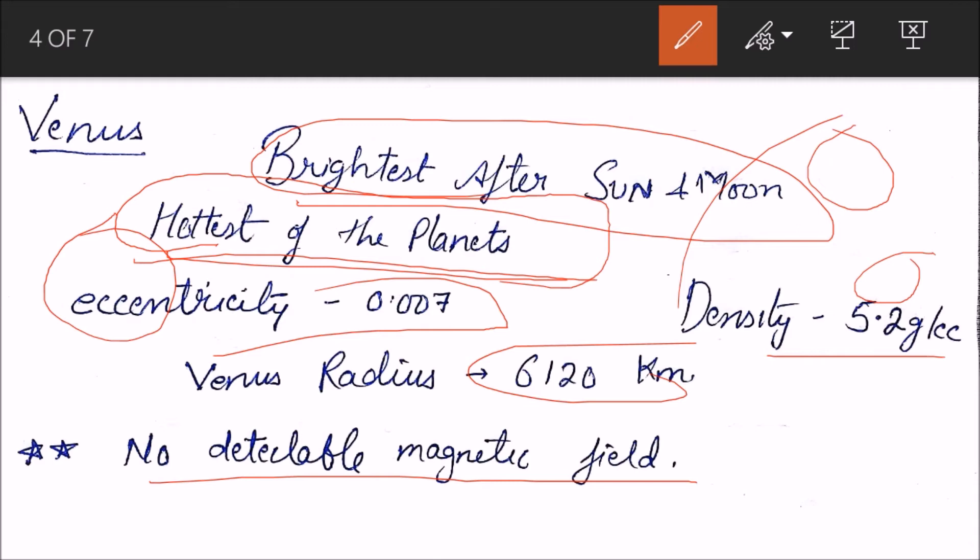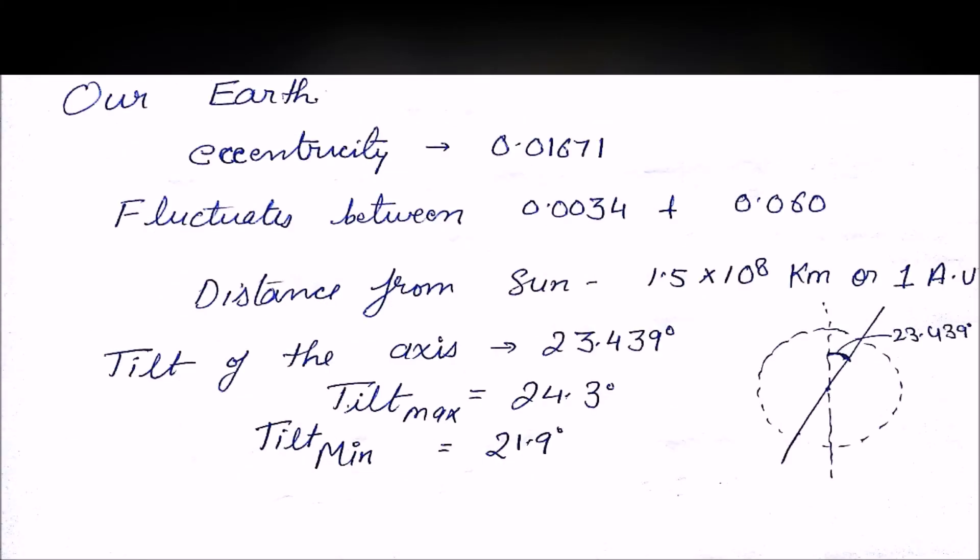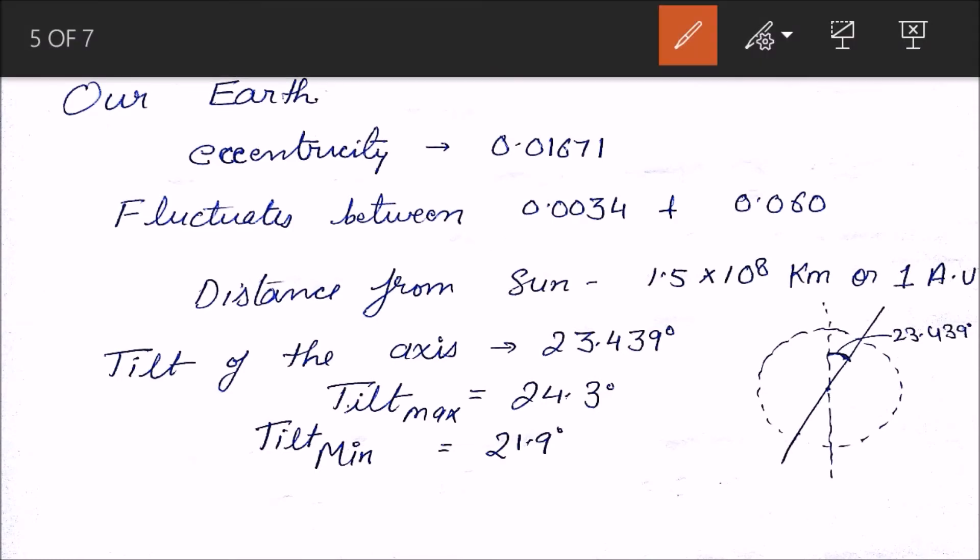Moving on, we have our Earth. The eccentricity of Earth is 0.0167 and it is decreasing, which means the orbit is becoming circular. The eccentricity fluctuates between 0.0034 and 0.060. The distance from the Sun is 1.5 × 10⁸ kilometers, which is also called one astronomical unit.